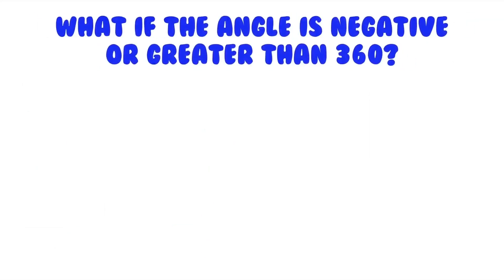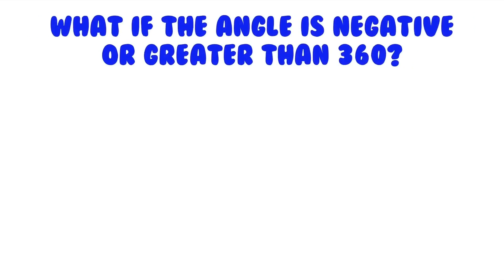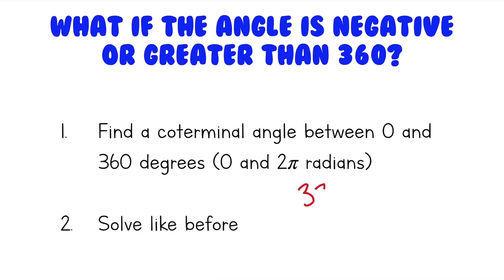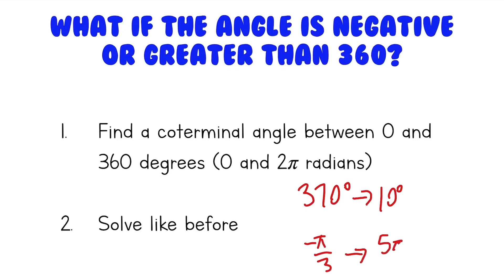What if the angle is negative or greater than 360 degrees or 2 pi? The first step is to find a coterminal angle between 0 and 360 degrees, or 0 and 2 pi radians. Then just solve like before. For example, a 370 degree angle converts to a 10 degree angle — those two are coterminal. Or if you're given negative pi over 3, convert that to 5 pi over 3 and follow the same steps.